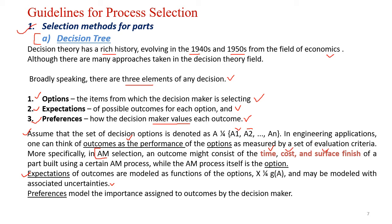Then comes the preference model. The important thing here is what you are going to assign from the outcome. The decision maker gives some preference — if the process is taking very less time, that preference is rated as 1 or good. If he is getting it at very low cost, he is going to rate it high automatically. So he raises the preference score and does the assignment in the preference model.